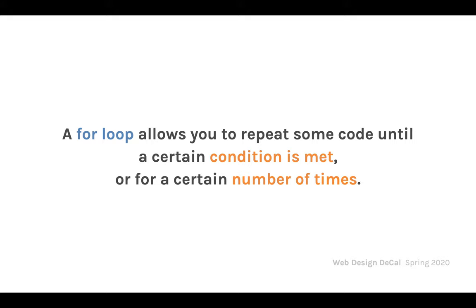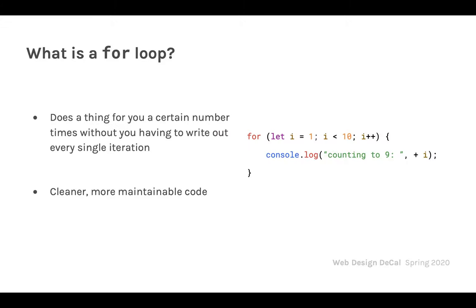A for loop allows you to repeat some code until a certain condition is met, or for a certain number of times. This uses conditions similar to what we learned about with if statements last lecture. The for loop code is much cleaner and more maintainable — you're not going to write console.log 10 times, for instance.